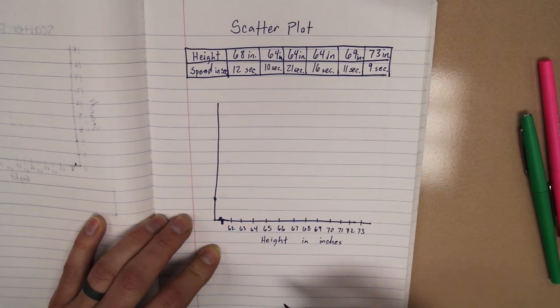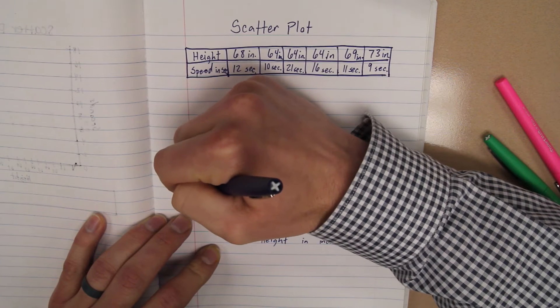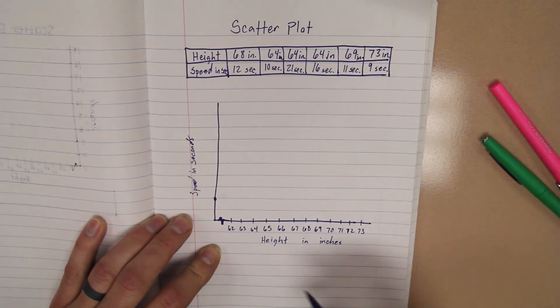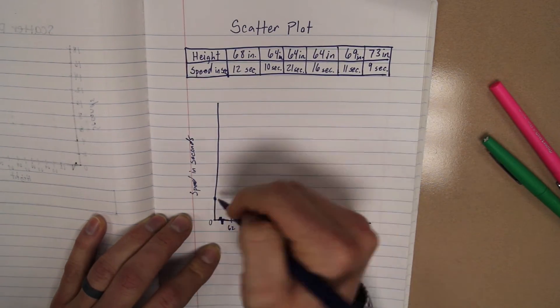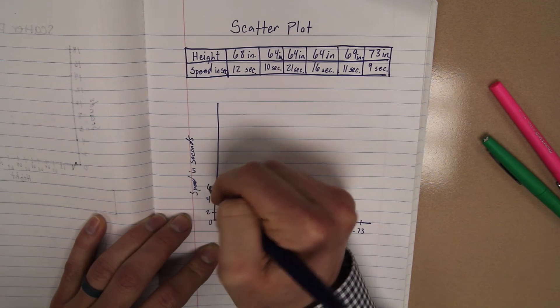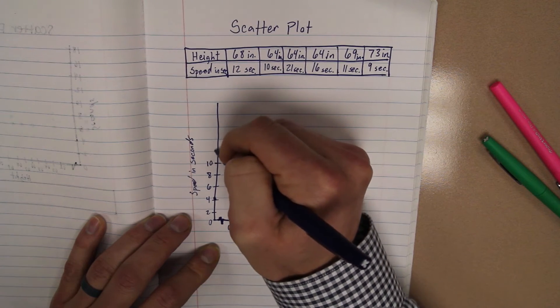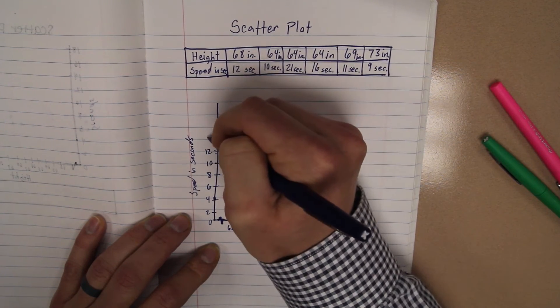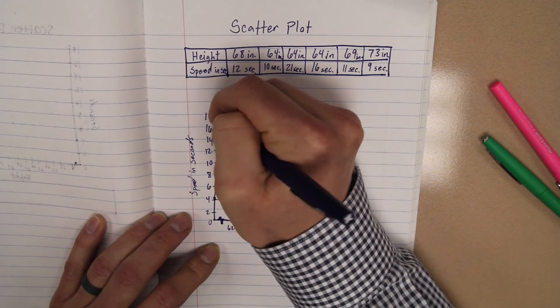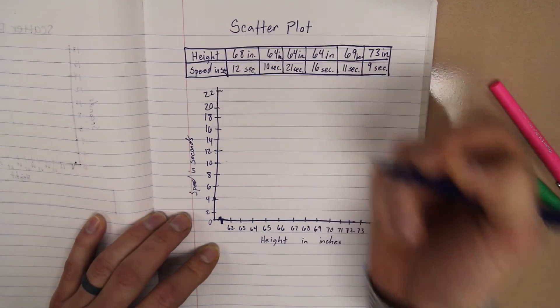And then over here, we're going to have our speed, or speed in seconds. Sorry for the messy handwriting. Okay, and so I'm going to count these off. I'm going to keep this as 0. 2, 4, 6. I'm just going to count by 2s here to make it easier. 10, 12, 14, 16, 18, 20. A little bit higher, 22. All right.